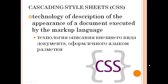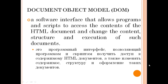Cascading Style Sheets (CSS): technology for description of the appearance of a document executed by the markup language. Document Object Model (DOM): a software interface that allows programs and scripts to access the contents of an HTML document and change the content, structure, and execution of such documents.